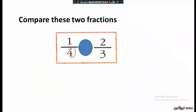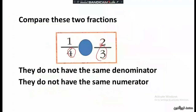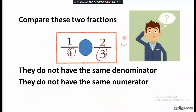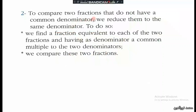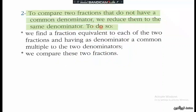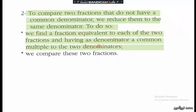Now consider comparing 1 over 4 and 2 over 3. Here neither the denominators nor the numerators are the same. In this case we must reduce them to a common denominator by finding equivalent fractions for each, using a common multiple of the two denominators.